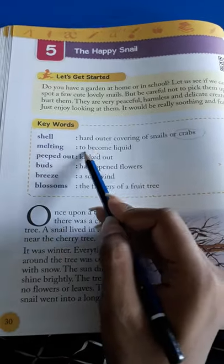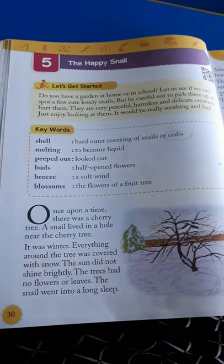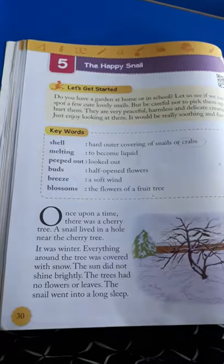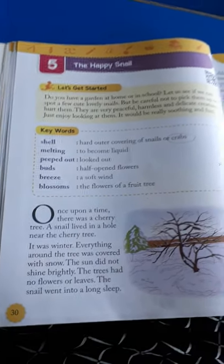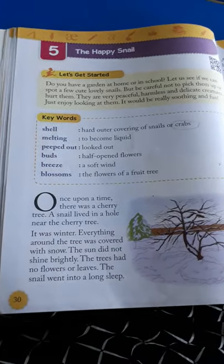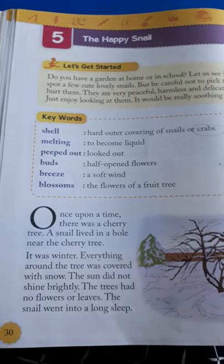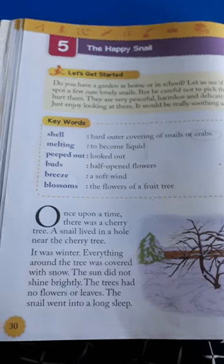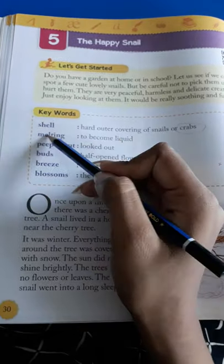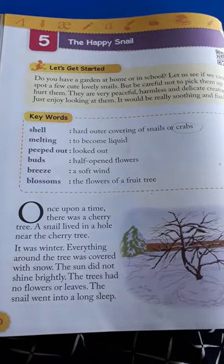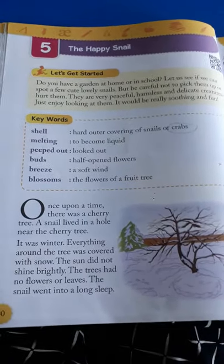Now 'melting' — to become liquid, pighal jaana. For example, take ice: when you take ice out of the refrigerator, at room temperature it starts melting. Similarly, ice cream, if you don't finish it quickly, after some time it also starts converting to liquid — it melts. So melting simply means something melting or becoming liquid. Next keyword: 'peeped out' — it means looked out, jhaakna.